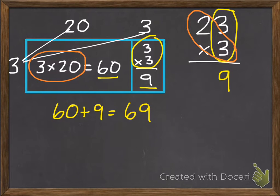We can also think of this as 3 times 2 tens. If we have 3 times 2 tens, that will equal 6 tens, which is 60. And that is our answer.